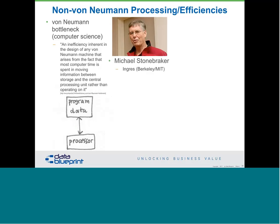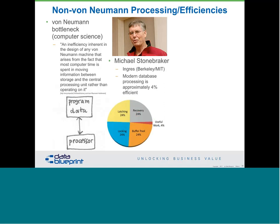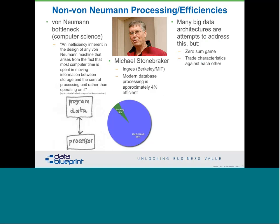People like Michael Stonebreaker started to poke around and say, given that speed is going to be a bottleneck, what can we do with databases as well? His piece that had a lot of database manufacturers upset with him was that he came back and said modern database processing is about 4% effective. Well, that's an issue. Big data architectures are different, but we are still governed by the laws of physics — it's a zero-sum game where we have to trade these characteristics back and forth against each other.